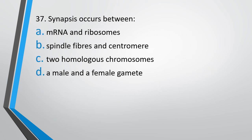Question number 37. Synapsis occurs between mRNA and ribosomes, spindle fiber and centromere, two homologous chromosomes, or a male and a female gamete. The correct answer is option C, between two homologous chromosomes.